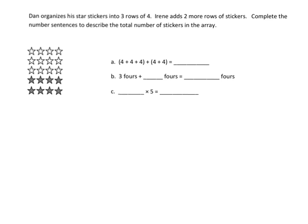In this problem, Dan organizes his star stickers into 3 rows of 4. Irene adds 2 more rows of stickers, so that's what this picture is representing—Dan and Irene. Then it says complete the number sentences to describe the total number of stickers in the array. In this one, this is Dan, this is Irene, and so together we have 20 stickers.